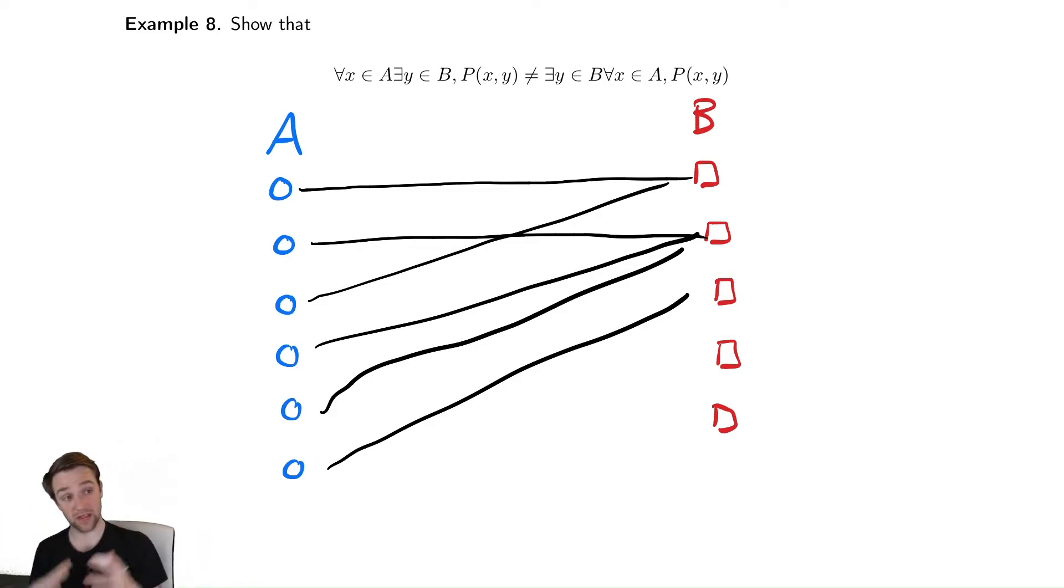All I need is that every single thing in A is pointing at something in B. And that is the idea of P(X,Y) being true, visualized by that line. It's saying that for everything on the left hand side, there is a corresponding connection on the right hand side. That's what the left hand side is saying.